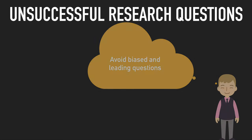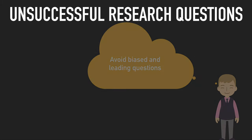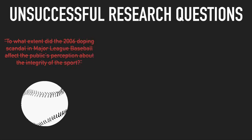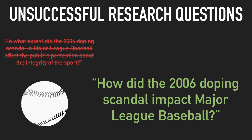Finally, be careful of biased or leading questions, where you have already decided what the solution is. Consider the question: 'To what extent did the 2006 doping scandal in Major League Baseball affect the public's perception about the integrity of the sport?' This assumes the doping scandal did change public perception, which we can't know without research. A better question would examine multiple factors or look at the scandal more holistically: 'How did the 2006 doping scandal impact Major League Baseball?'